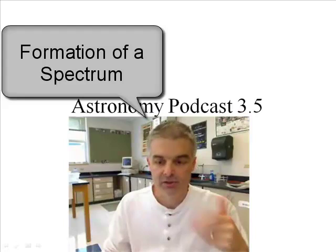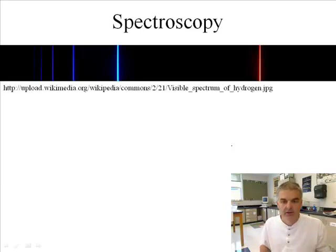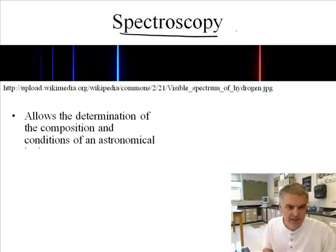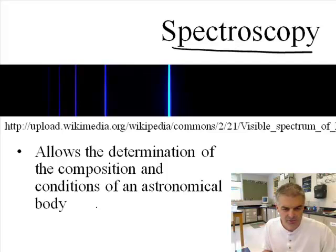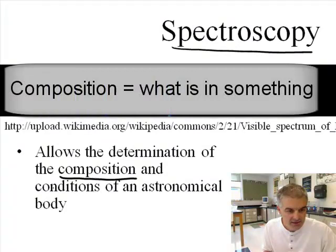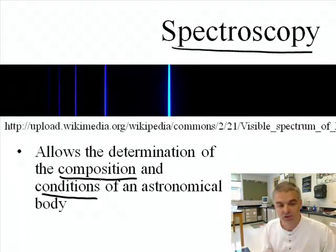Formation of a spectrum. It is the study of spectroscopy. What that does is it allows the determination of the composition and conditions of an astronomical body. Composition, that means what's in it. What's in the star and the conditions, like its temperature. So, what are the conditions on a particular astronomical body, the sun, or it could be Mars or Jupiter, whatever.